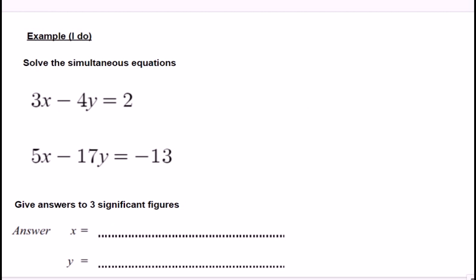So here you go. Something that I'm sure you've seen many times—a set of simultaneous linear equations. 3x minus 4y equals 2, 5x minus 17y equals minus 13.